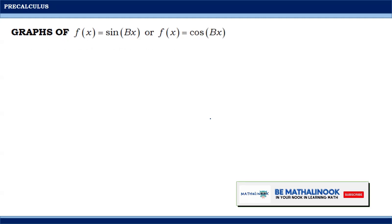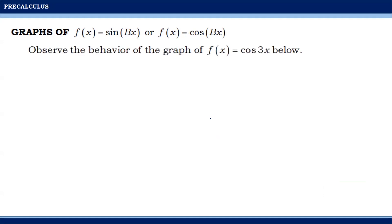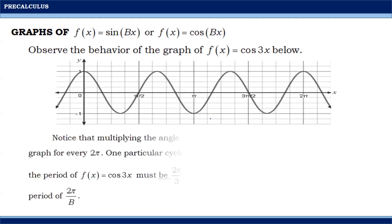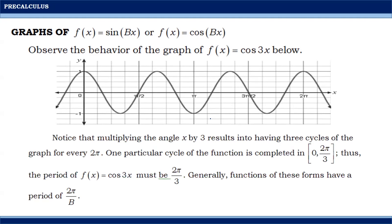This time, let us talk about the graphs of f(x) = sine(bx) or f(x) = cosine(bx). Observe the behavior of the graph of f(x) = cosine(3x). Notice that multiplying the angle x by 3 results in having 3 cycles of the graph for every 2π. One particular cycle of the function is completed in 0 to 2π/3. Thus, the period of f(x) = cosine(3x) is 2π/3. Generally, functions of these forms have a period of 2π/b.